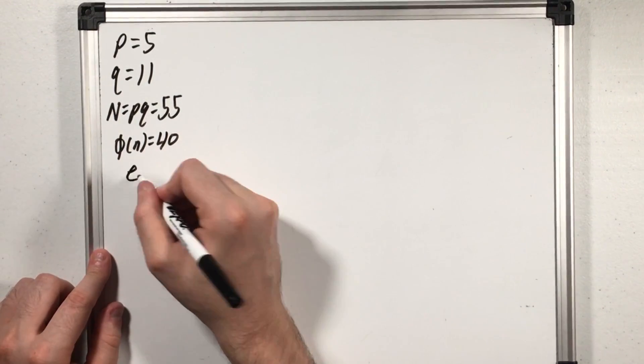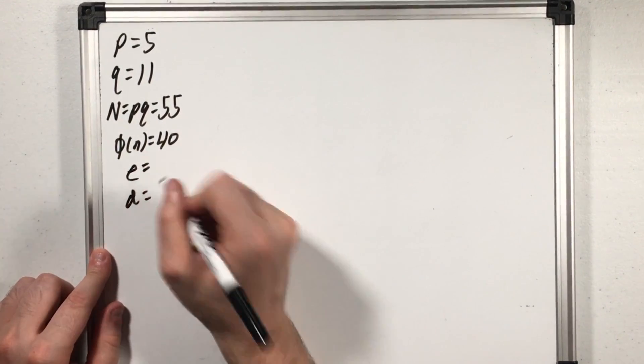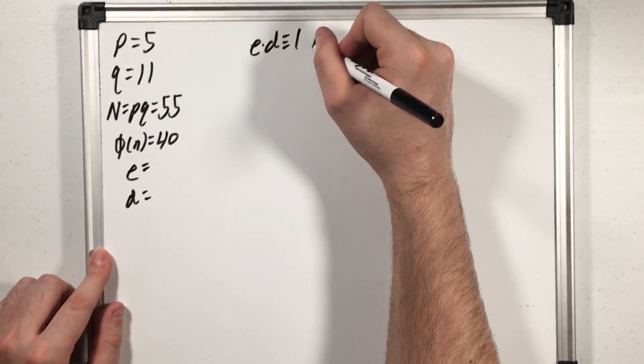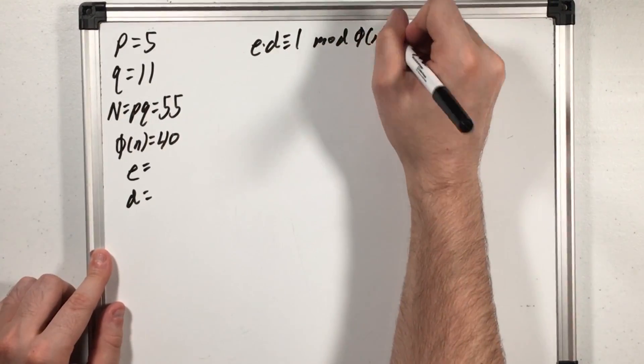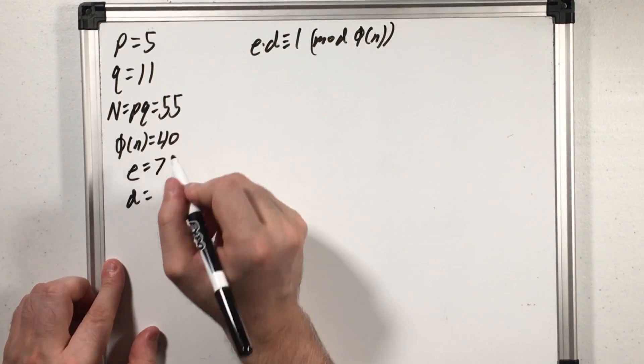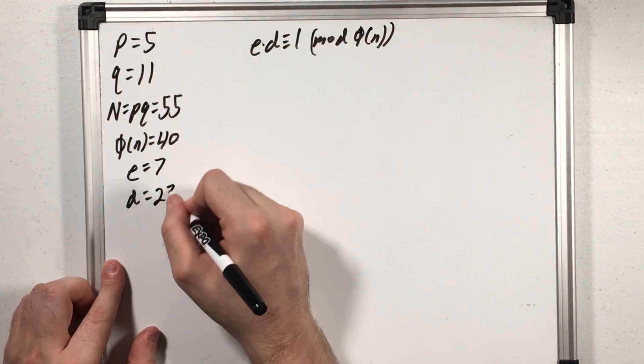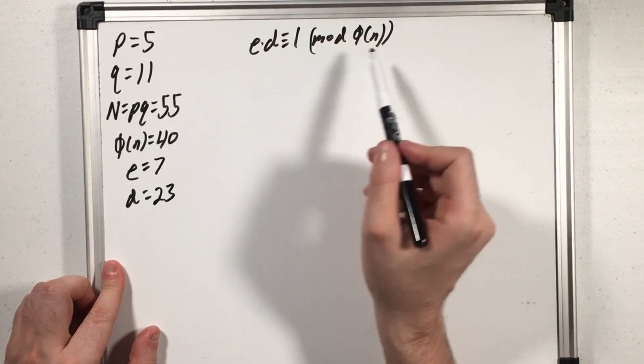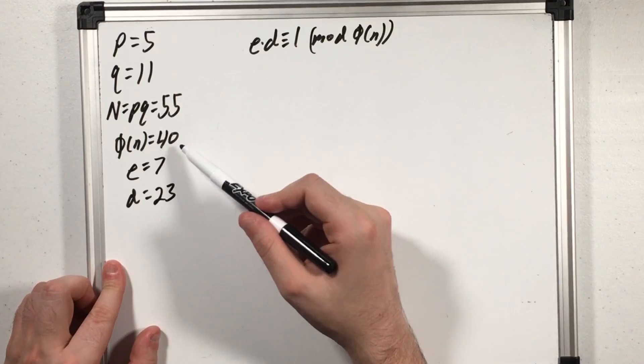Next we're going to pick two integers e and d such that e times d is congruent to 1 mod phi of n. So for example let's say e is 7 and d is 23 and yes if you do 7 times 23 then subtract 1 the result will be divisible by 40 our phi of n.